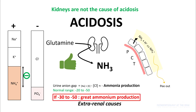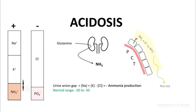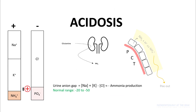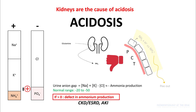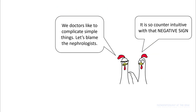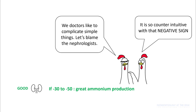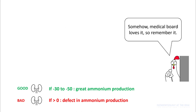If you have a urine anion gap between minus 30 to minus 50, that means you have great ammonia production by the kidneys and the cause of acidosis is extra-renal. If you have low ammonia production, your urine anion gap will become more positive, meaning the kidneys are not rising to the occasion and are the cause of the acidosis. A urine anion gap more than zero means there is a defect in ammonia production, and this is usually seen in renal causes like CKD, ESRD, and kidney injury. This is a commonly asked question on your boards, so remember: urine anion gap minus 30 to minus 50 means good ammonia production and good kidneys; more than zero means defect in ammonia production and bad kidneys.